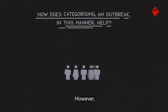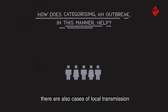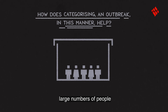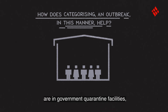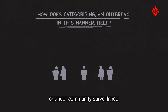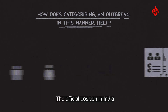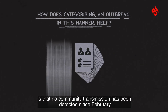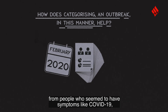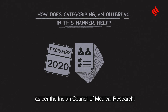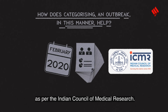However, there are also cases of local transmission — that is, stage 2. That is why a large number of people are in government quarantine facilities, in home quarantine, or under community surveillance. The official position in India is that no community transmission has been detected since February, from people who seem to have symptoms like COVID-19 but no travel or contact history, as per the Indian Council of Medical Research.